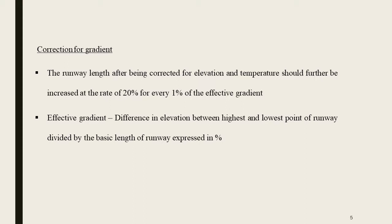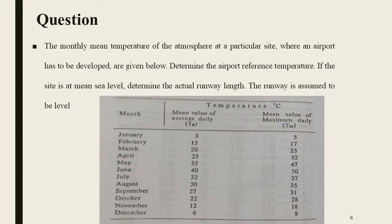The monthly mean temperature of the atmosphere at a particular site where an airport is to be developed is given. Determine the airport reference temperature. The site is at mean sea level; determine the actual runway length. The runway is assumed to be level.